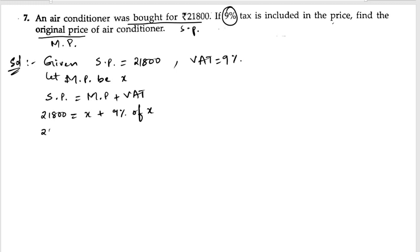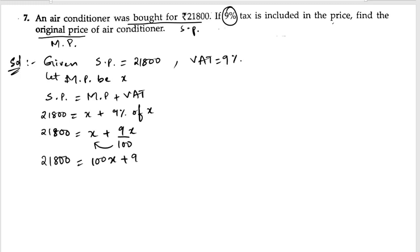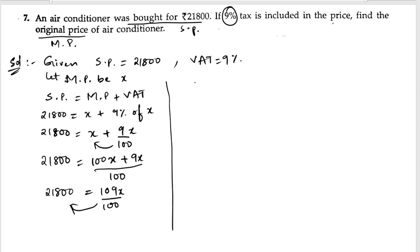So twenty-one thousand eight hundred is equals to x plus nine percent means nine by hundred into x. This gives twenty-one thousand eight hundred is equals to, taking common denominator hundred: hundred x plus nine x by hundred. So twenty-one thousand eight hundred is equals to one hundred and nine x by hundred.